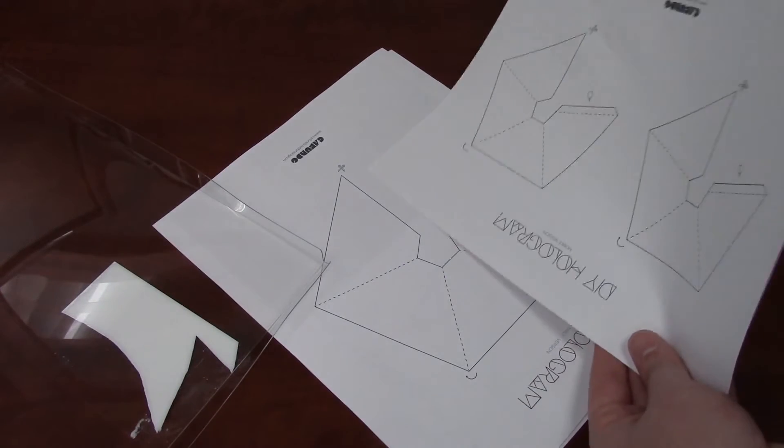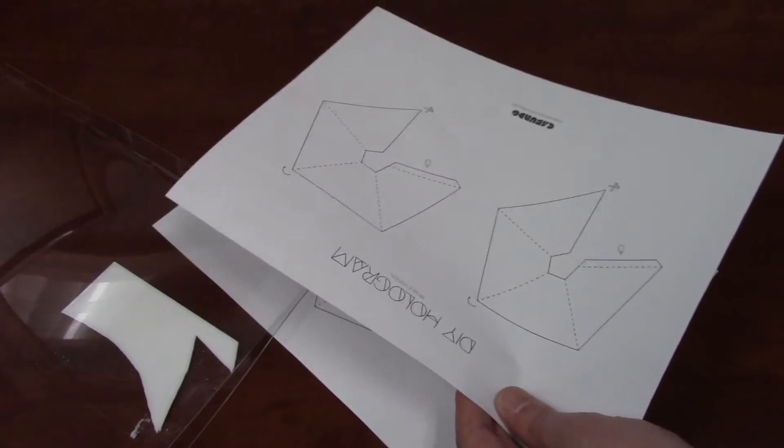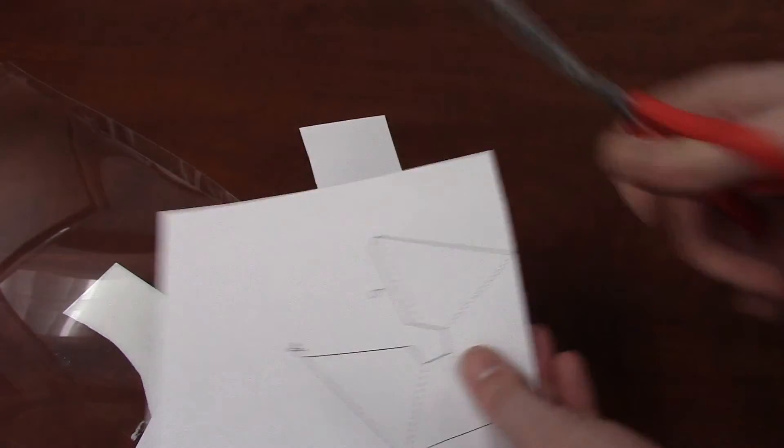We begin by selecting the phone or the tablet diagram. We are going to be using a cell phone. Cut the template out. Do not cut the dotted lines. Those are actually going to be folded.